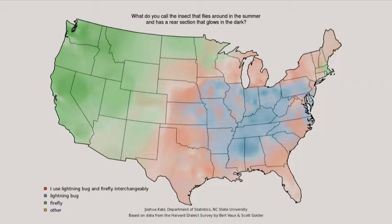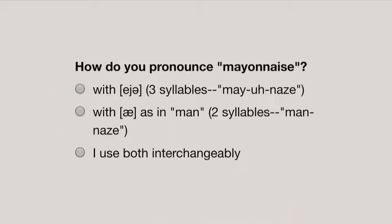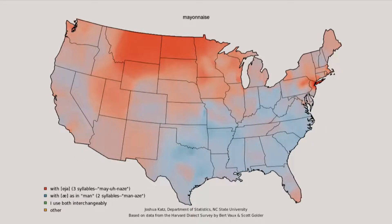Let's do one more for fun. How do you pronounce mayonnaise? With three syllables, mayonnaise, with two syllables, mayonnaise, or I use both interchangeably. Here's the map: in red is where people tend to say mayonnaise with three syllables, in blue is where people say it with two, and the green is where people use them interchangeably, but there doesn't seem to be a lot of that on this map.